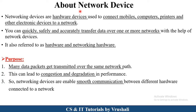The first point is: what exactly are network devices? As we discussed earlier, there are different types of networks like Local Area Network, Metropolitan Area Network, and Wide Area Network. Under those, there are different types of devices like mobiles, computers, printers, scanners, and different electronic devices. Network devices connect all these devices with each other and also connect multiple networks with each other. After connecting, they send information quickly, safely, and accurately between devices and all over the network. This is also referred to as hardware or networking hardware.